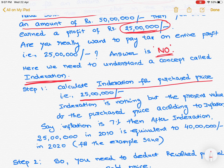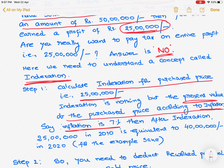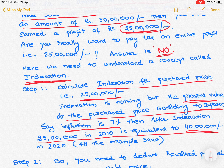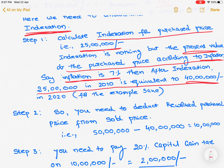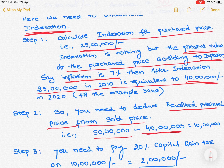Indexation is nothing but the present value of the purchased price, assessed based on inflation figures. Suppose inflation is at 7%; then after indexation, 25 lakhs in 2010 is equivalent to 40 lakhs in 2020 — for example purposes only. So the reworked purchase price means you deduct 40 lakhs from the sale proceeds. You sold the property for Rs. 50 lakhs, so 50 lakhs minus 40 lakhs equals 10 lakhs — that is the capital gain.